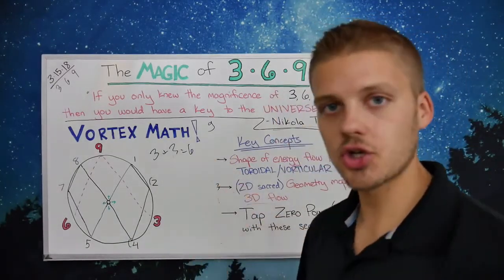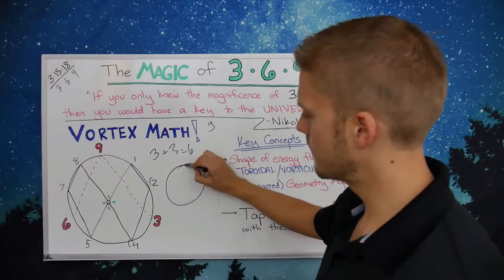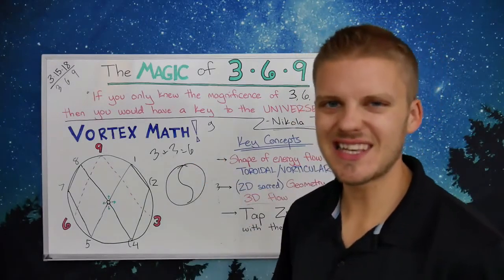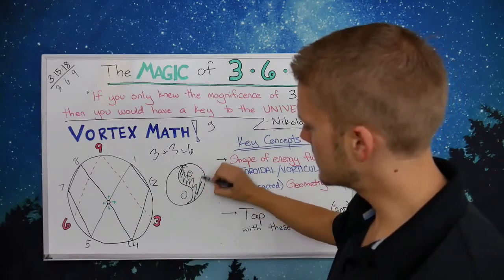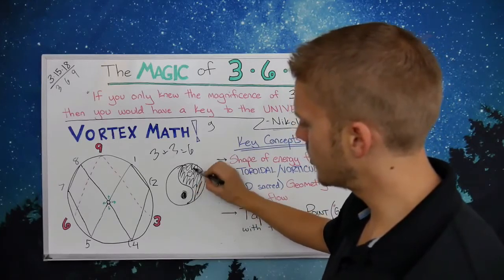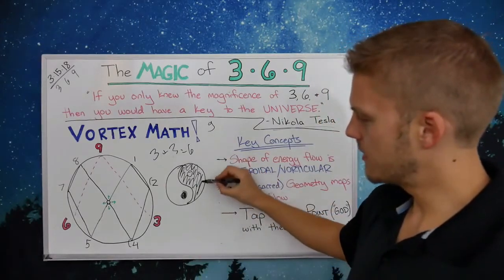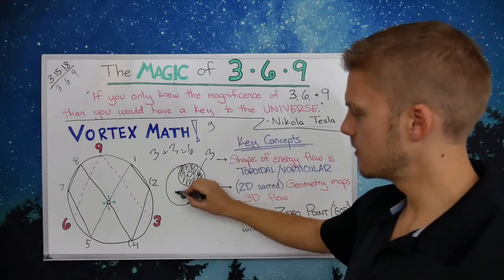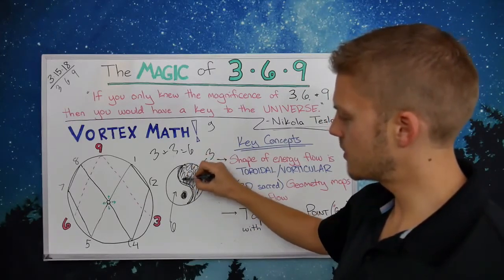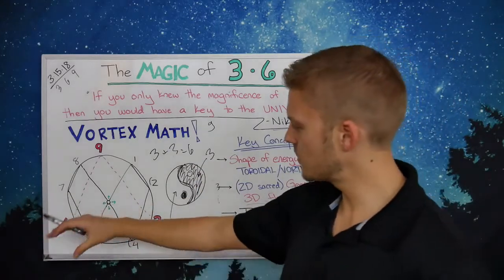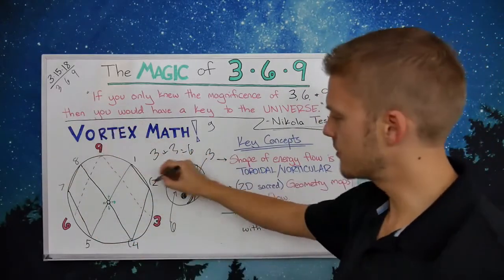This connects to the cosmic law of polarity — yin and yang. If I draw the yin-yang symbol here, one side is 3, the other side is 6, and the boundary between the two is 9. You have 3 and 6 always oscillating between each other — one is yin, one is yang, going back and forth. And then 9 is that divine boundary right there. Philosophy and science both in action.